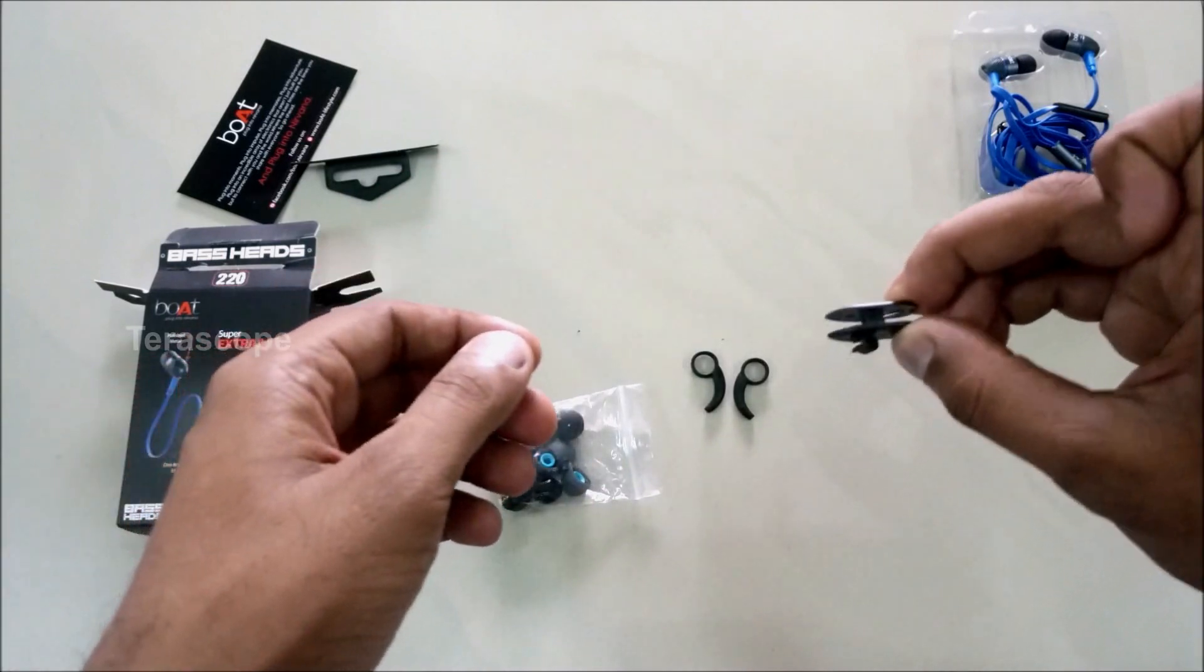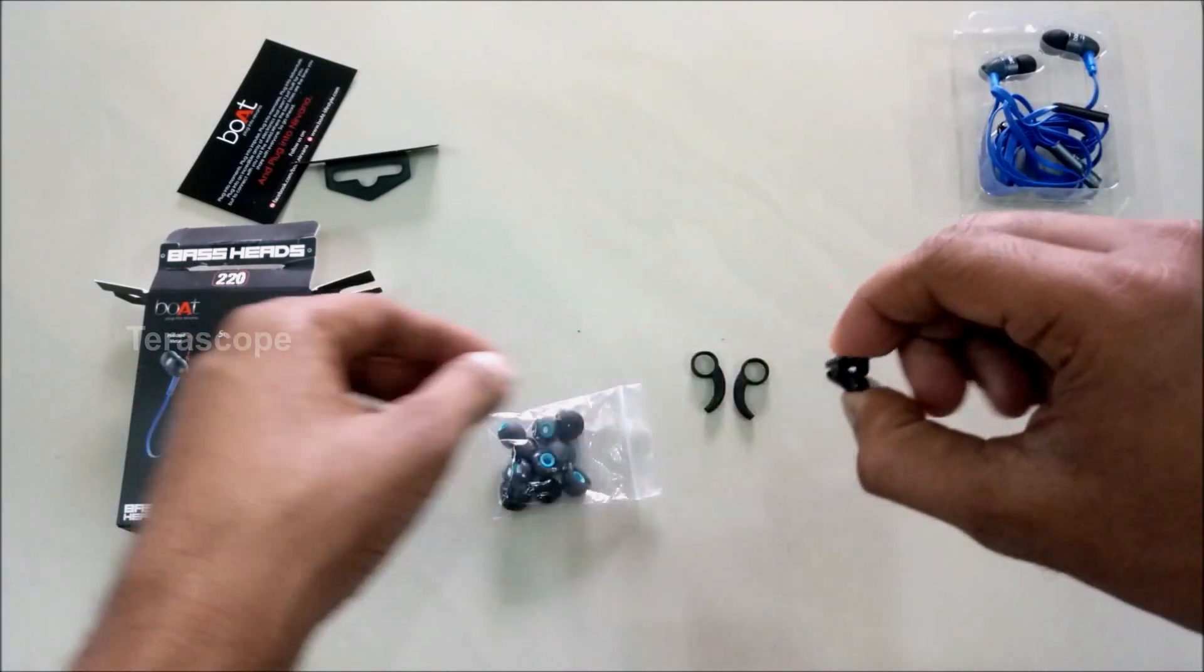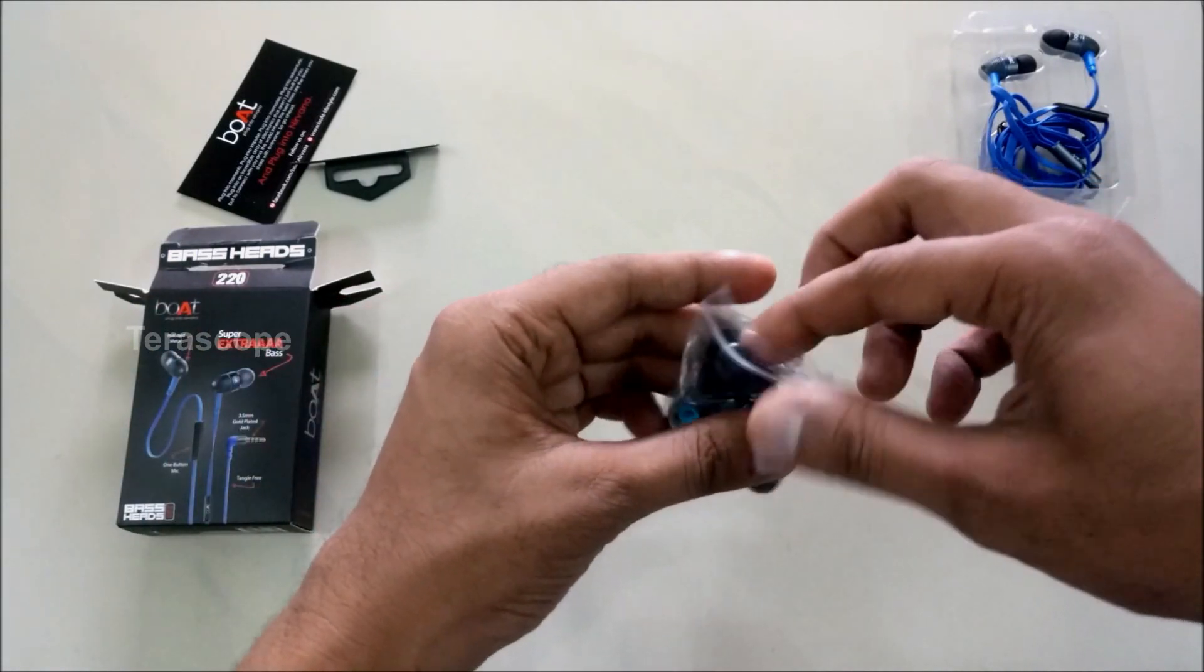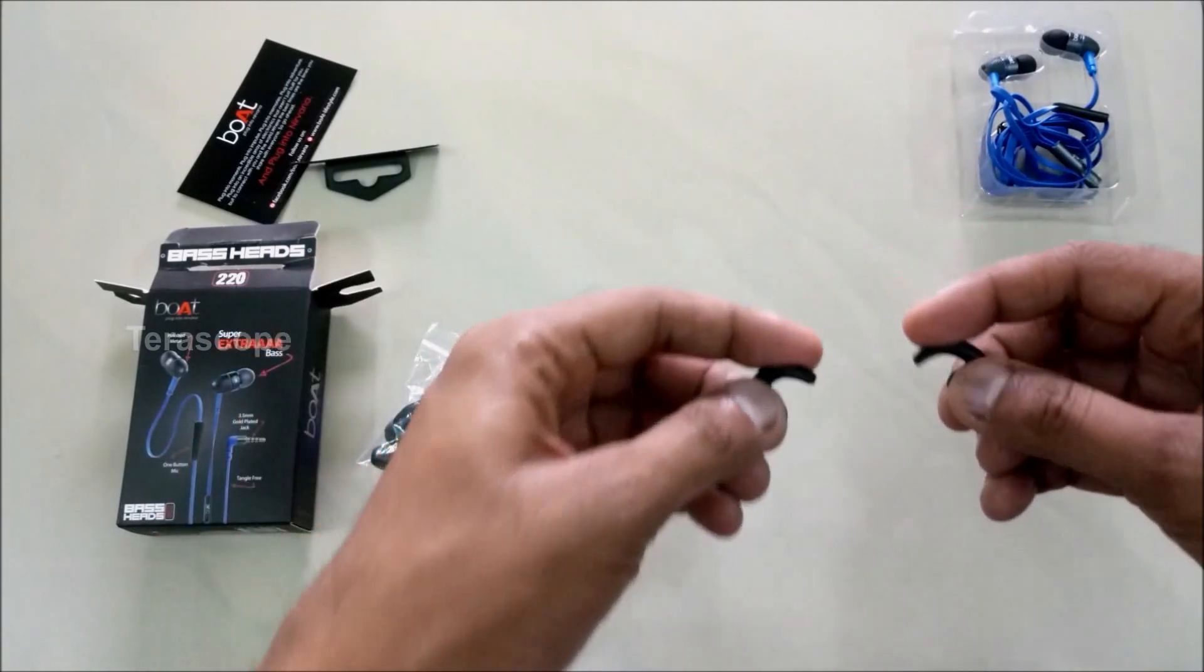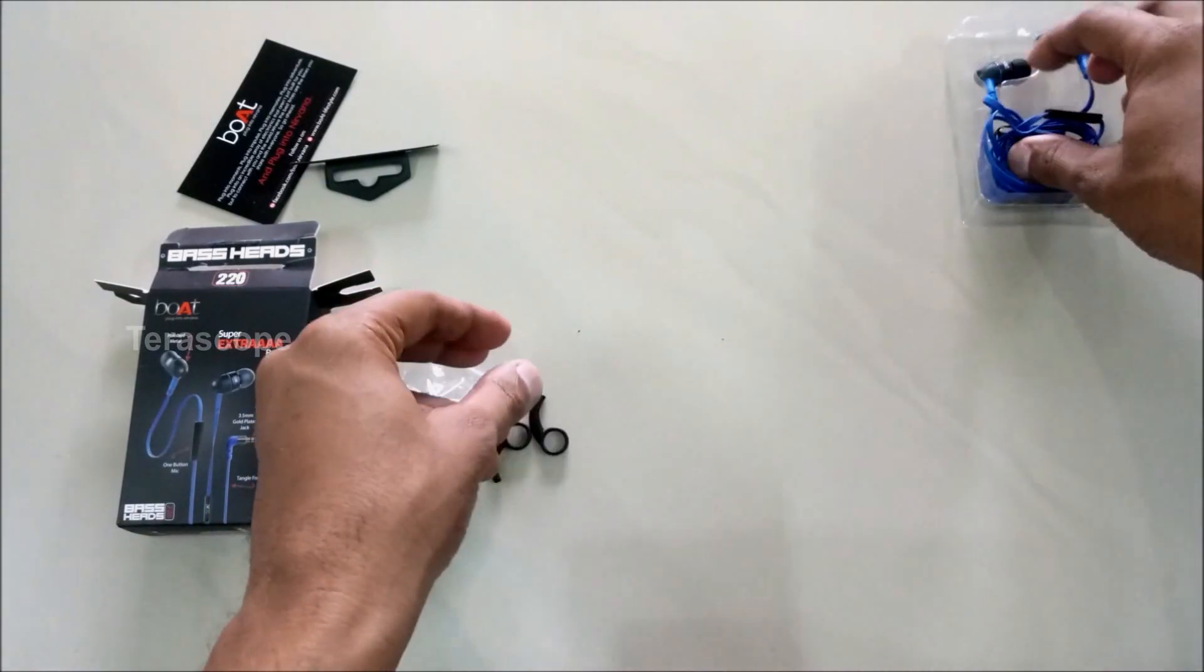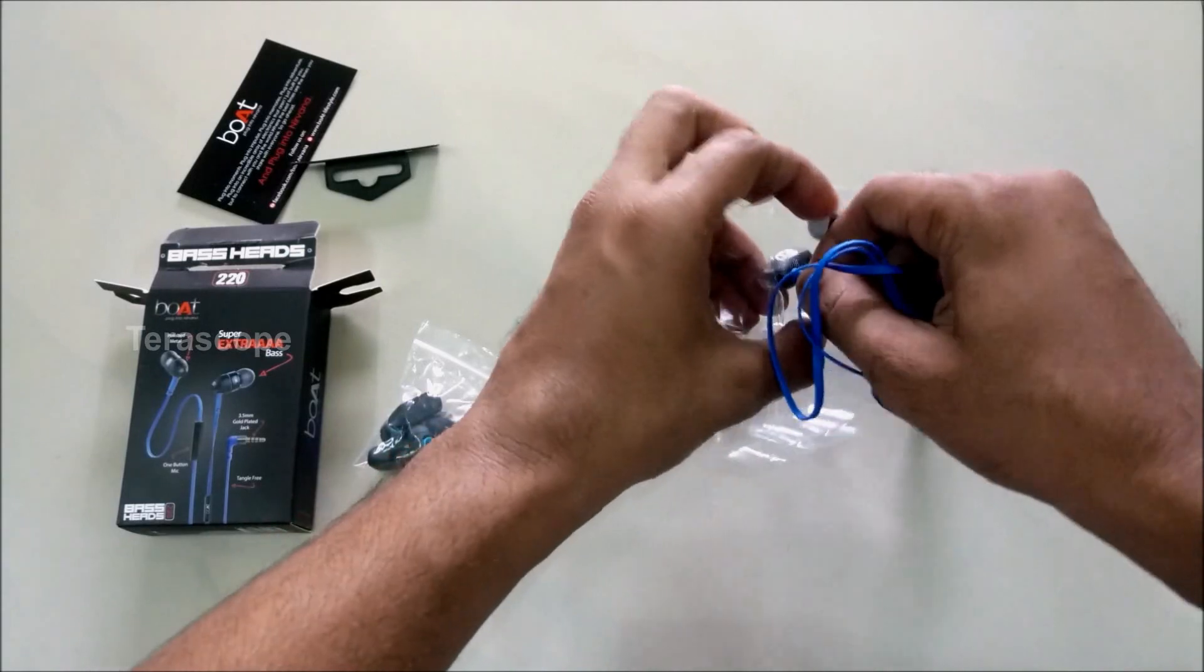Now we have a clip here in the headset to position the mic correctly. This rubber piece is an ear stabilizer that connects to the earpiece and helps stabilize it.